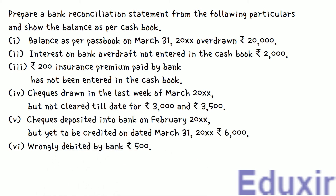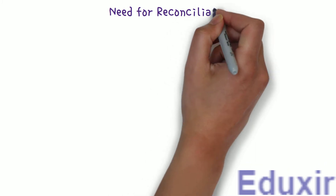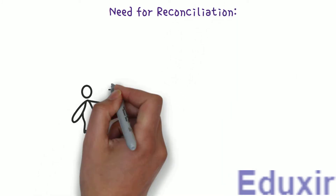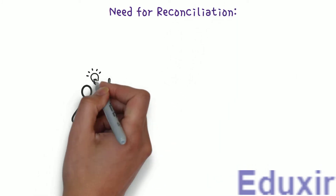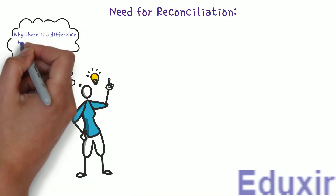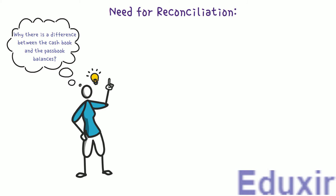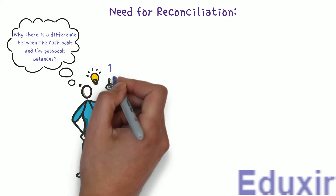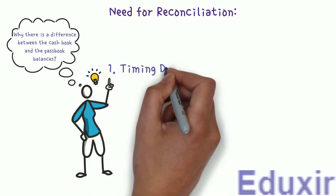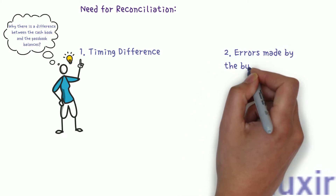Before we proceed with the analysis of these particulars, let us first recap about why there is a need for reconciliation. By preparing the bank reconciliation statement, we get an idea about why there is a difference between the cashbook and the passbook balances. This difference could be due to: 1. Timing difference in recording the transaction, or 2. Errors made by the business or the bank.